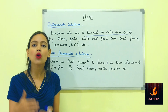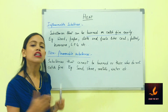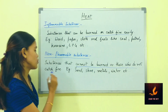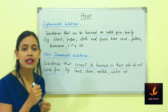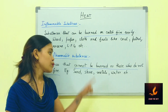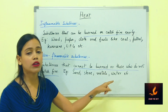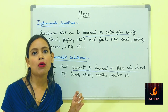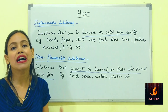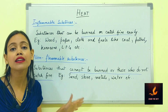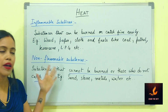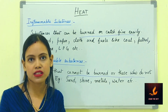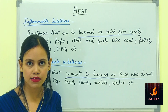The second category is non-flammable substances — those that cannot be burned or do not catch fire easily. Examples include sand, stone, metals, and water. At petrol pumps, for instance, you will find buckets of sand because sand is a non-flammable substance also used as a fire extinguisher along with water and other substances.